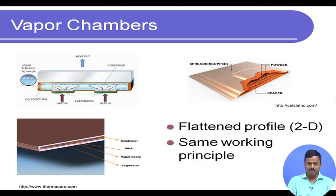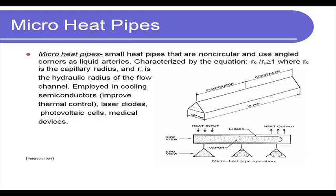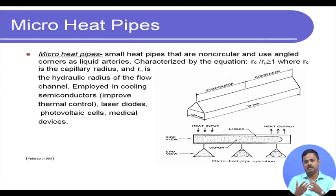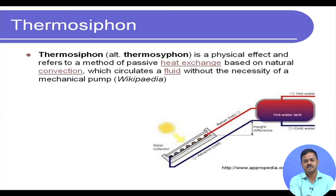The vapor chamber comes as a plate where one end is the heater and the other end is the condenser. Micro heat pipes are a wickless structure with sharp corners, bends, and narrow grooves that themselves provide capillary action, because the effective capillary radius and the hydraulic radius of the flow channel are comparable. Micro heat pipes are used especially in small electronic applications, not so much for waste heat recovery.